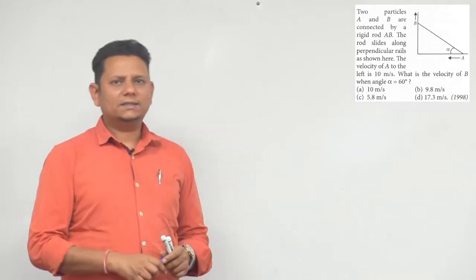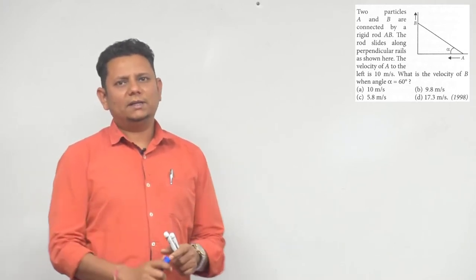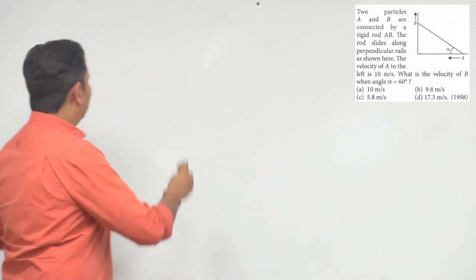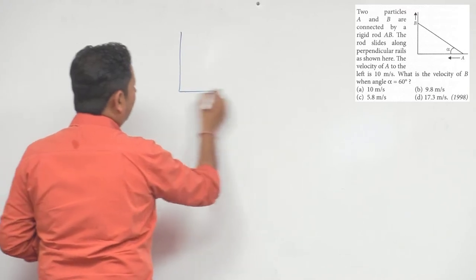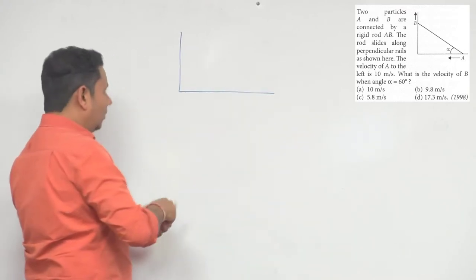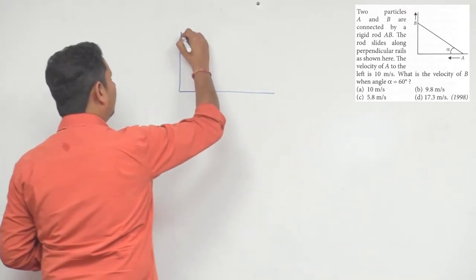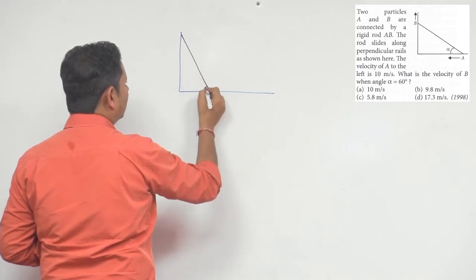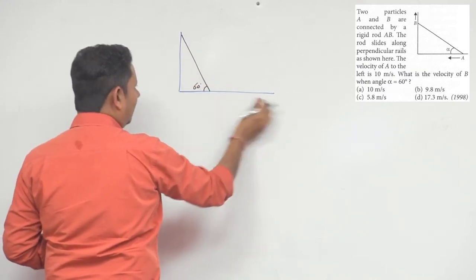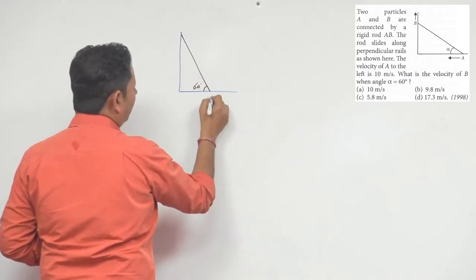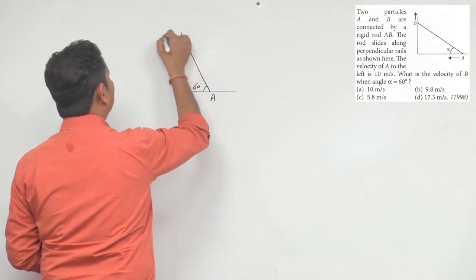We will use two methods to solve this. I want you to do both methods. The scenario is that these are walls and two rails. On top of it, the angle is 60 degrees. This is particle A and this is B.